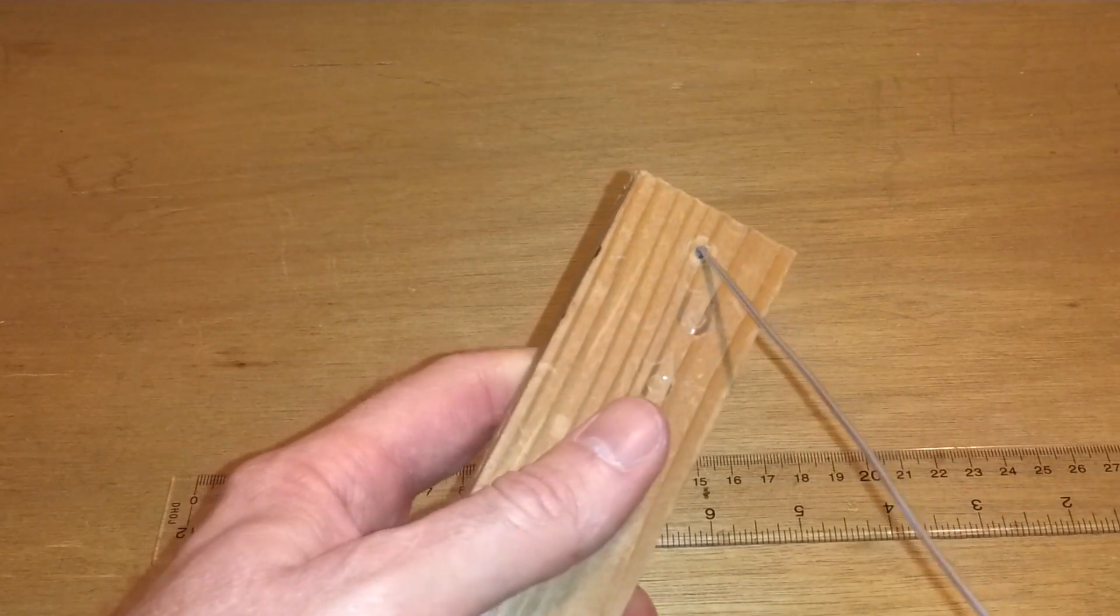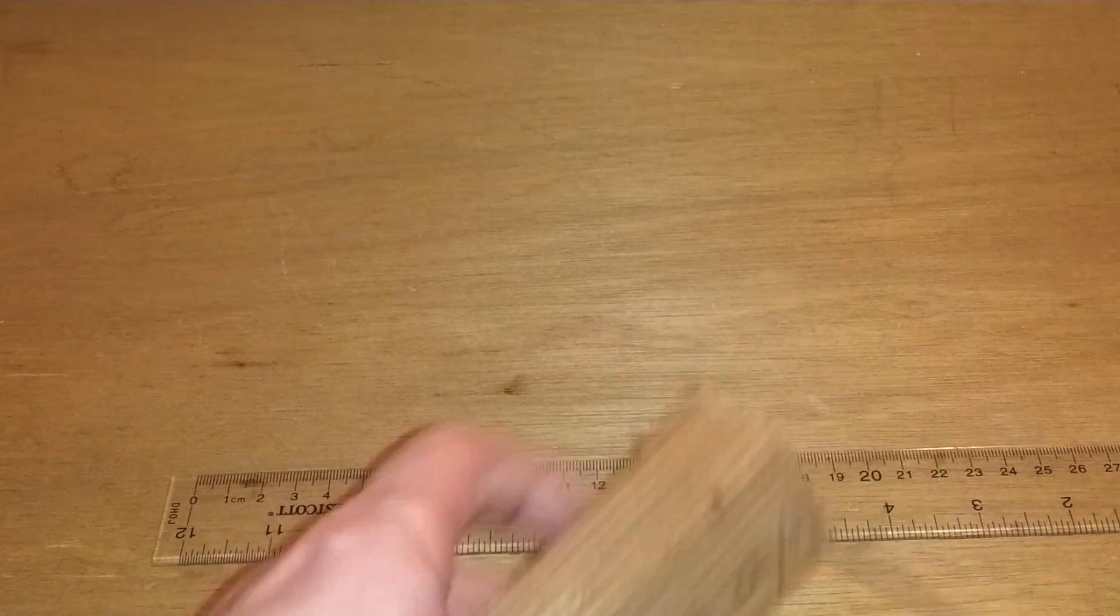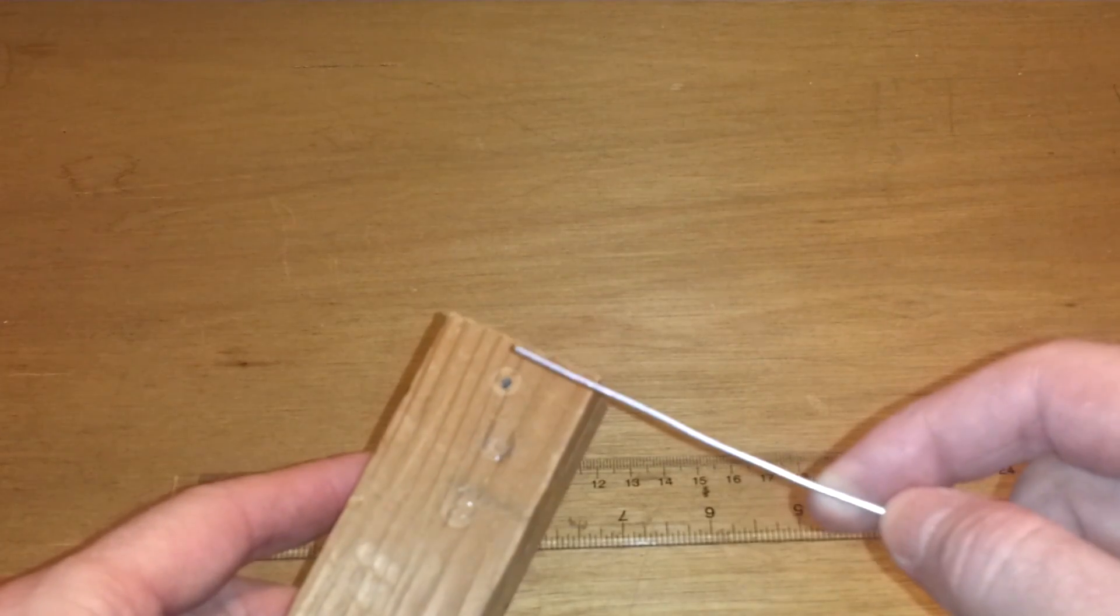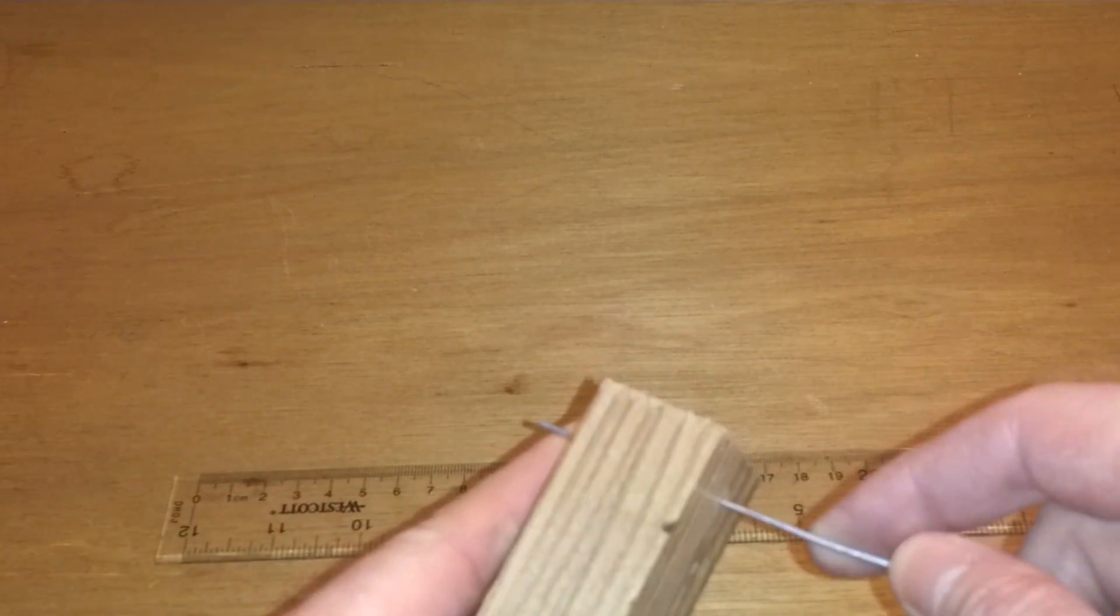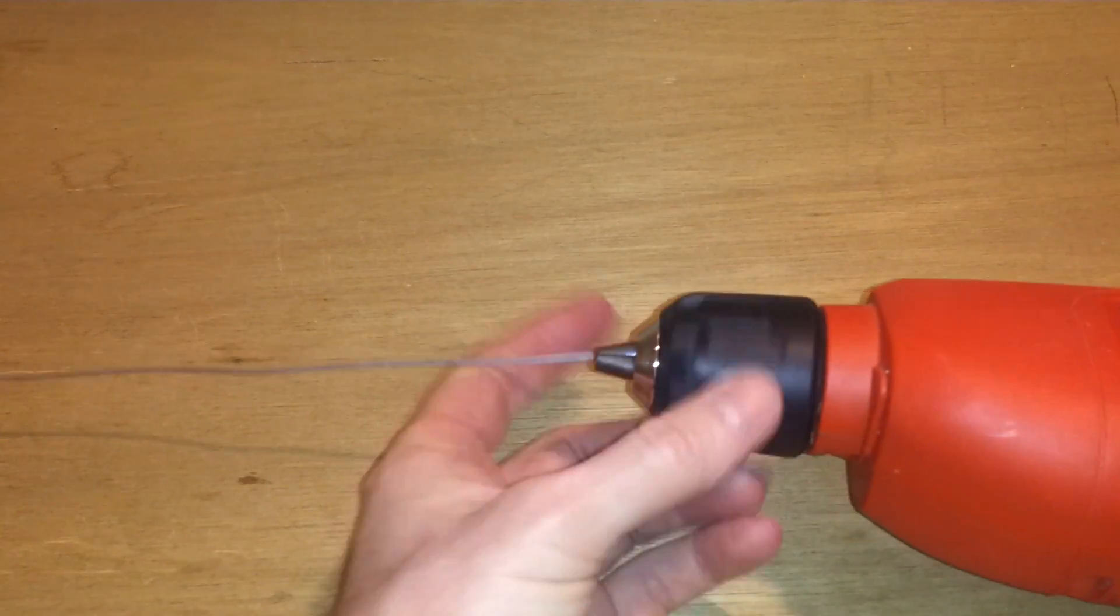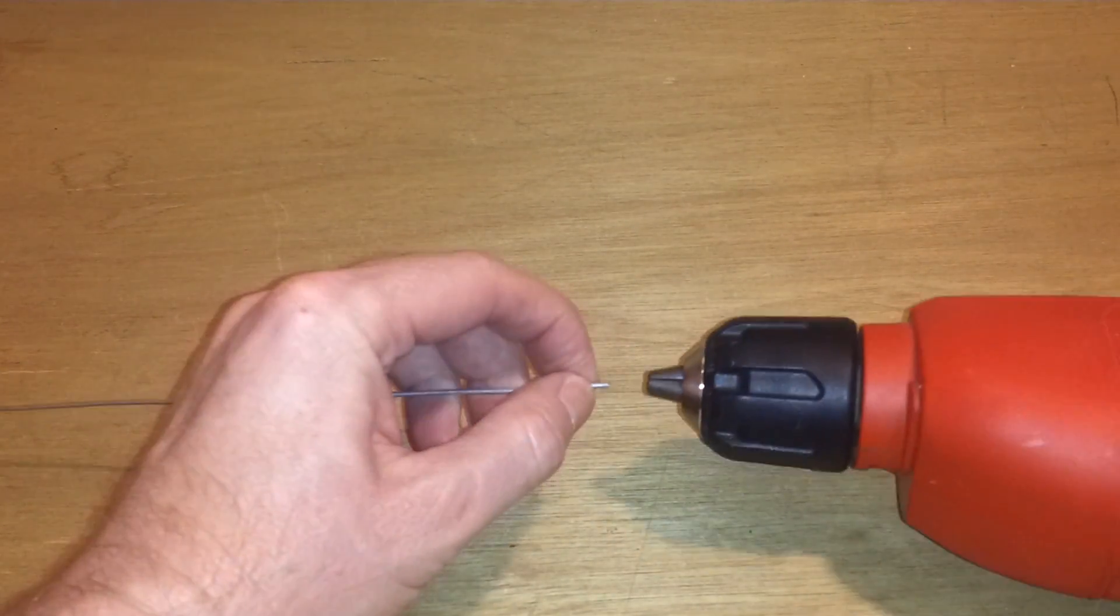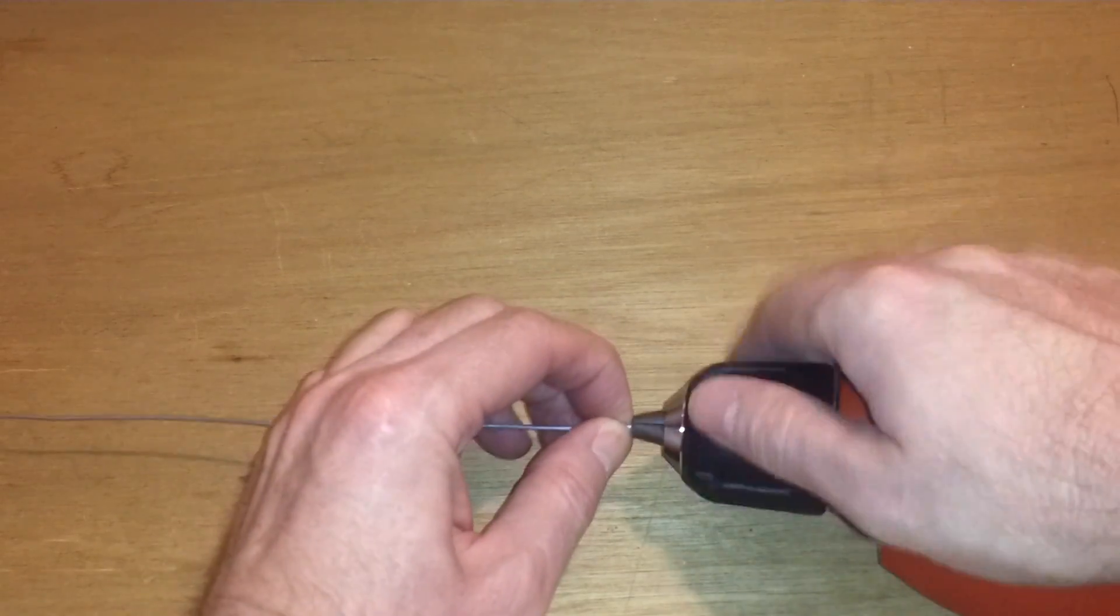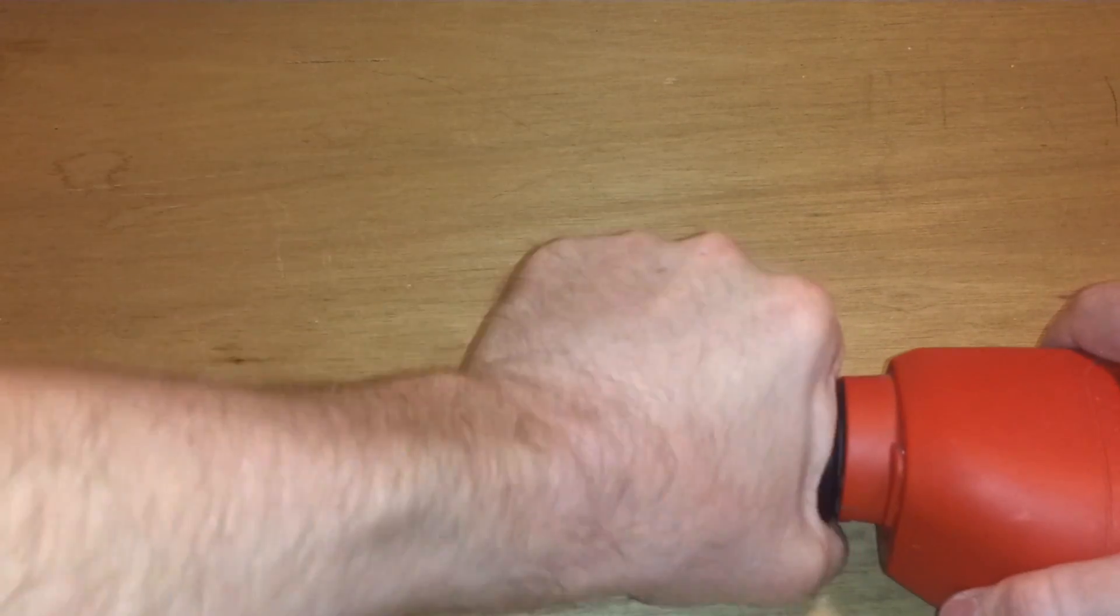Drill a hole in it that's a little bit bigger than the wire. For this 16 gauge wire I used a 1/16 inch drill bit. Take my drill, put the end of the wire in there. Put it in about maybe an eighth of an inch and then tighten your chuck down to it. And make sure it's completely tight.